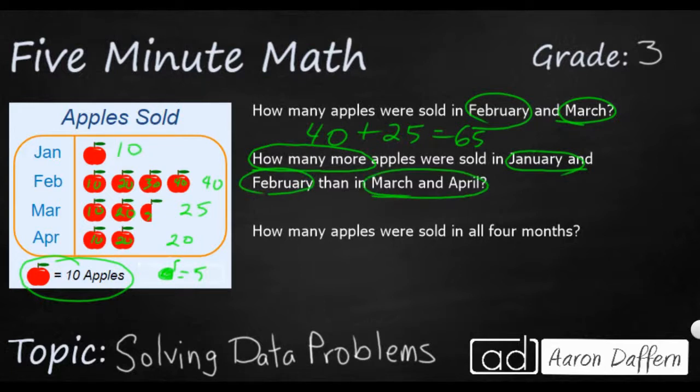So January and February, that is 10 plus 40. Add that up. And then we're going to compare that. Take away March and April. So March is 25 and April is 20. And so we need to do the addition first. So let's do 10 plus 40. That's going to be 50. And then 25 and 20 is going to be 45. So look at that. It's just barely five more. So that's probably the toughest type of problem you'll see with a pictograph is having to add two different chunks and then subtracting two.